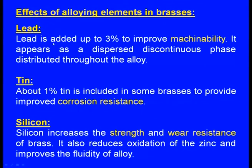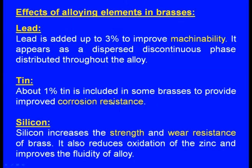Lead is added up to 3 percent to improve the machinability; it appears as a discontinuous phase distributed throughout the alloy. Tin: about 1 percent of tin is included in some brasses to provide improved corrosion resistance. Silicon increases the strength and wear resistance of brass; it also reduces oxidation of the zinc and improves the fluidity of the alloy — wherever silicon comes into picture, it improves the fluidity.